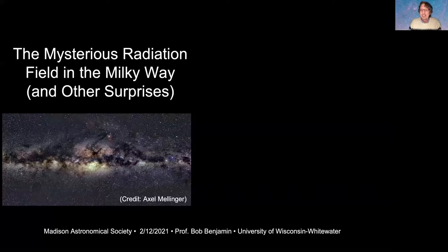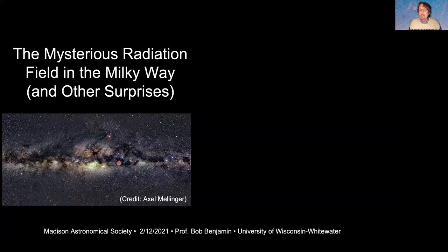You can't see this with your eye, but with a long photographic exposure you can see that band of light going across the sky, which is the disk of our own Milky Way galaxy seen edge-on because we're in the middle of it.